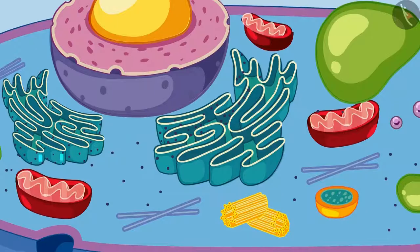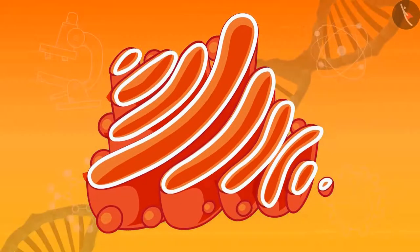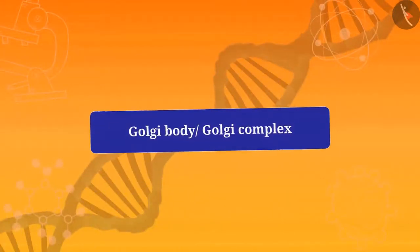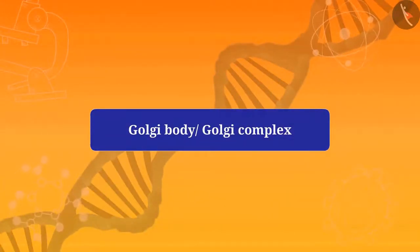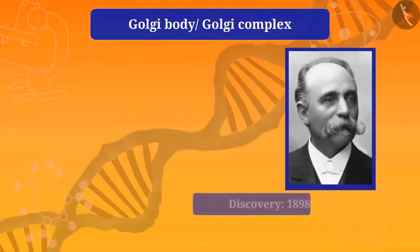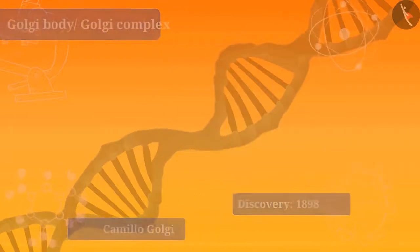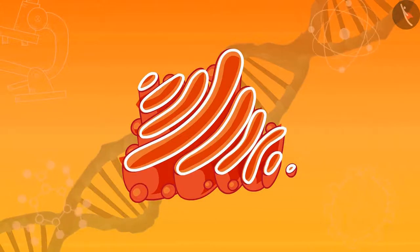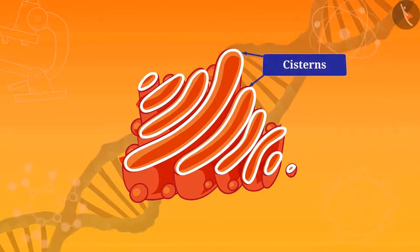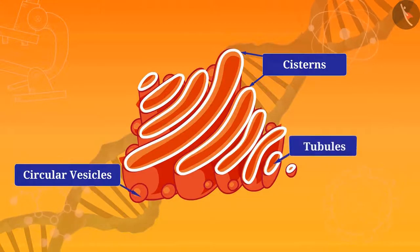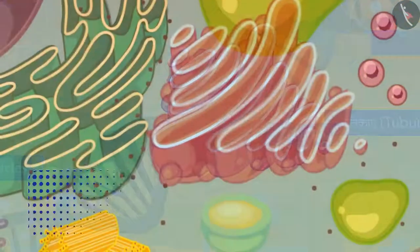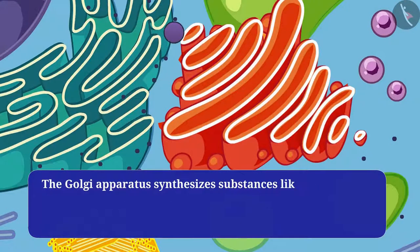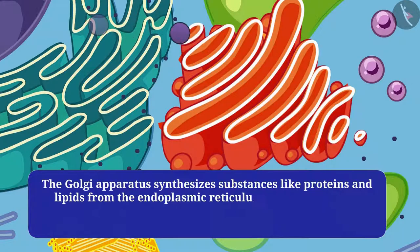Now we will understand the next cell organelle: the golgi apparatus, also called golgi body or golgi complex. It was discovered in 1898 by Camillo Golgi. It consists of a system of membrane-bound vesicles arranged approximately parallel to each other in stacks called cisterns. The golgi apparatus also has circular vesicles and tubules.